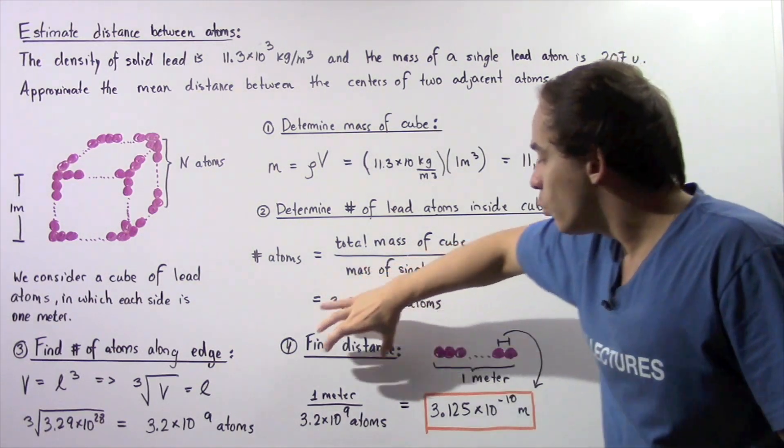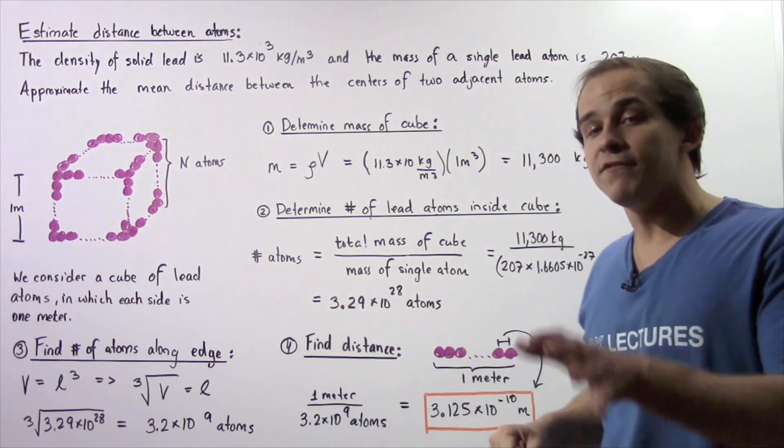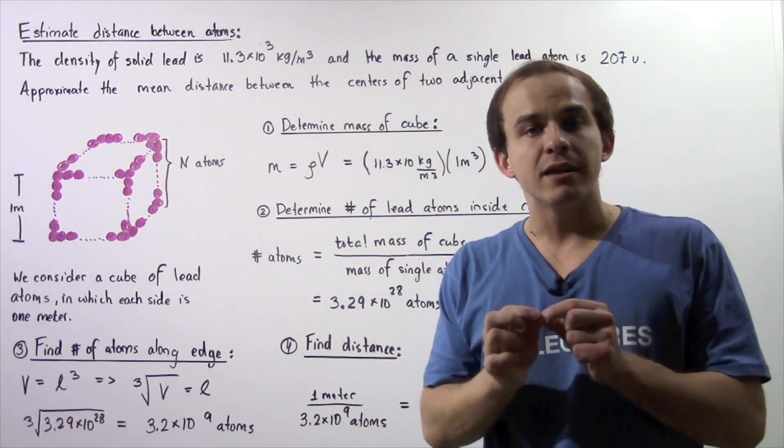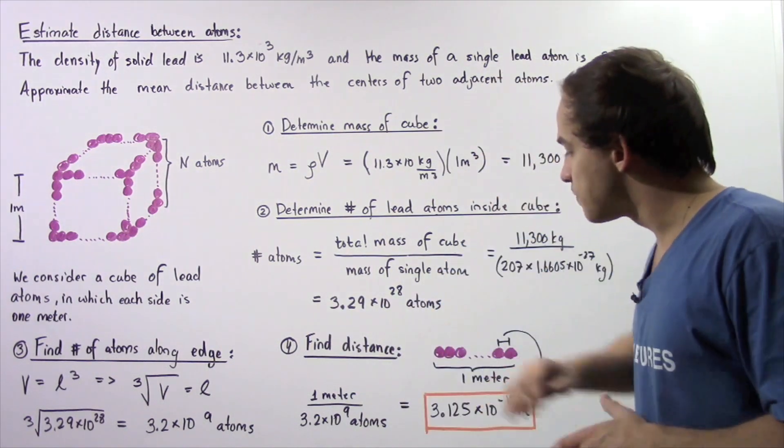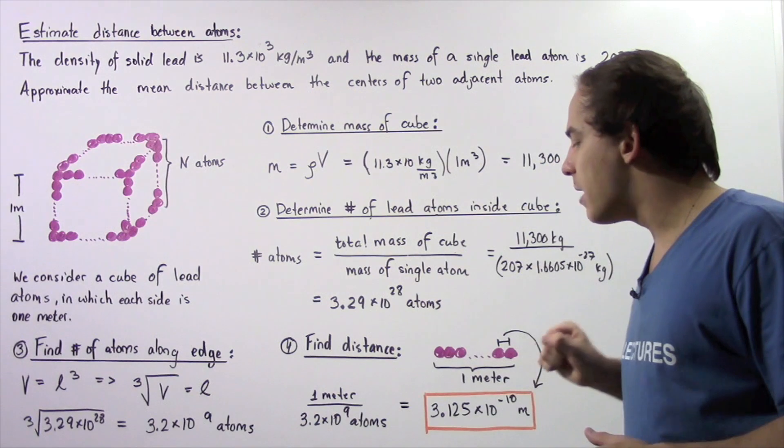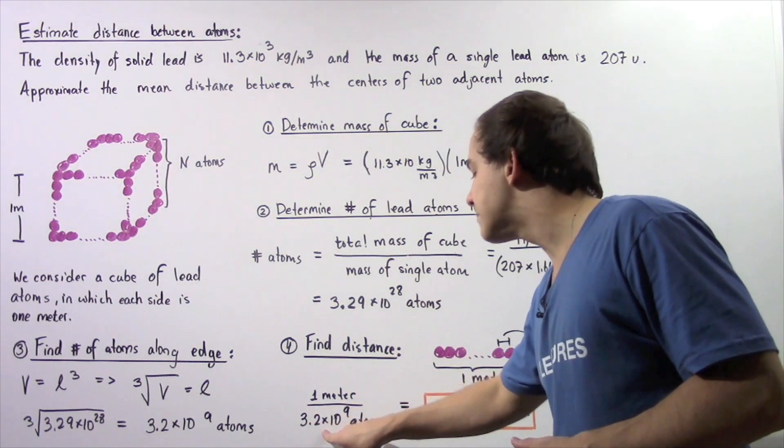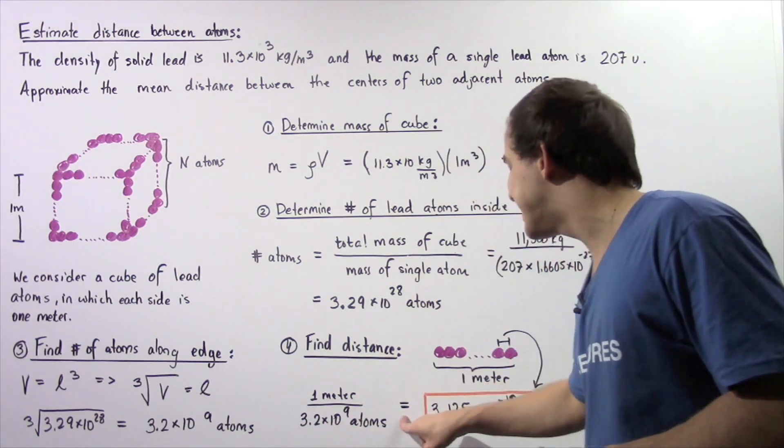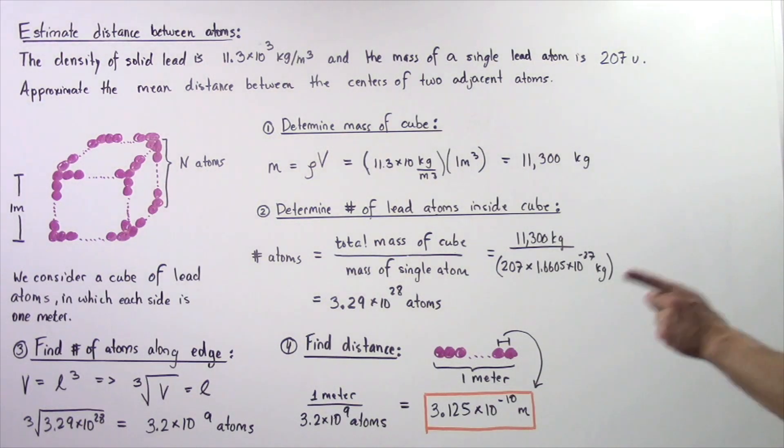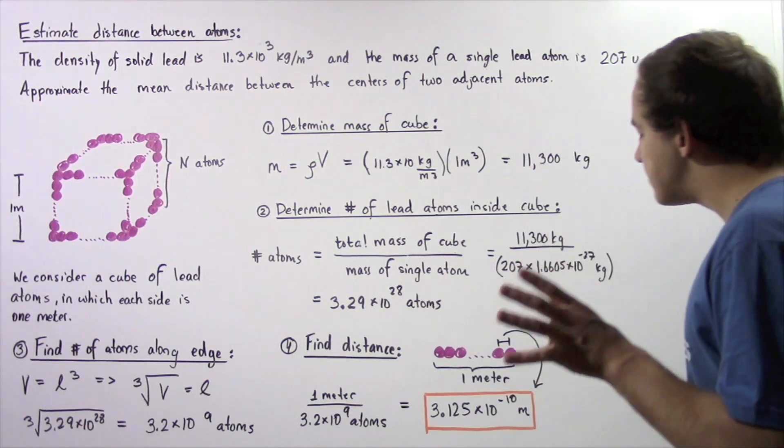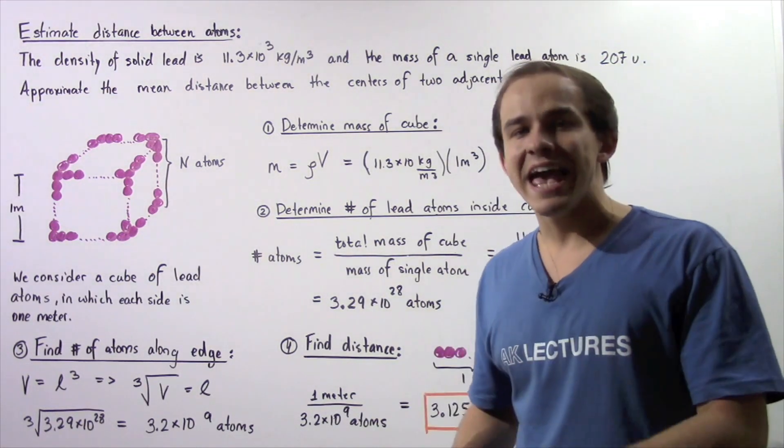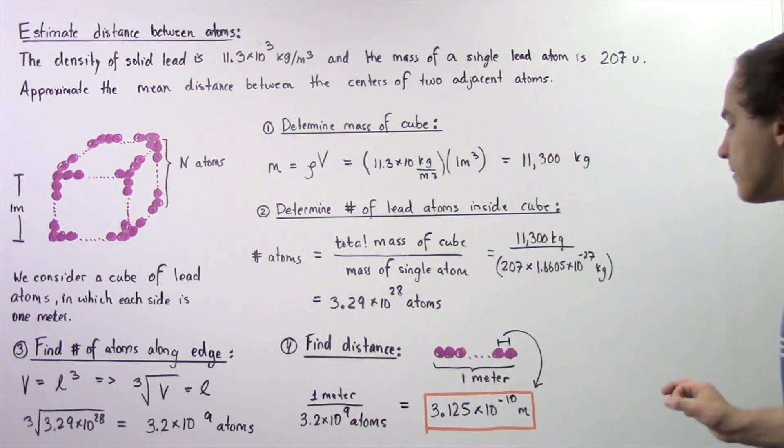adjacent atoms, we simply take one meter and divide it by the number of atoms along that single edge. So one meter divided by 3.2 times 10 to the 9 atoms gives us a value of 3.125 times 10 to the negative 10 meters per atom.